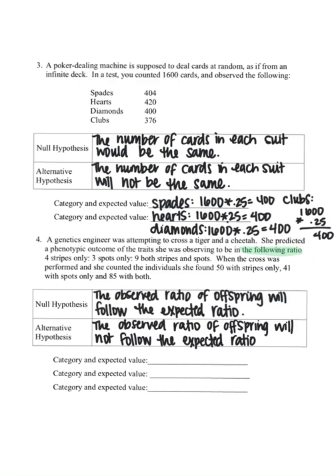This example has a few extra steps to find the expected number. First, I'll list out my categories: stripes only, spots only, or both. Looking at my ratio, I have 4, 3, and 9. To find my percentage, I need to total up those numbers: 4 plus 3 plus 9 equals 16. So for stripes I would expect 4 out of 16, for spots I would expect 3 out of 16, and for both I would expect 9 out of 16. That gives me my fractions that I would expect.